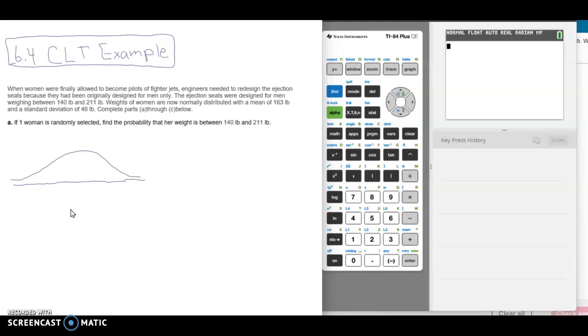We know that the mean of the data is 163 pounds, so that'll fall in the middle of our diagram. And we're trying to find the probability that one individual's weight is between 140 pounds and 211 pounds. So this is not drawn to scale, but it's going to give us an idea of what we're looking at.